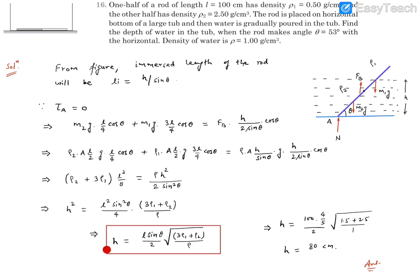So h finally comes out to be, by taking square root on both sides, L sin θ by 2 within root 3ρ₁ plus ρ₂ divided by ρ. This is the expression of the height up to which if the water goes, then this rod which is non-uniform will make angle 53 degrees with the horizontal.